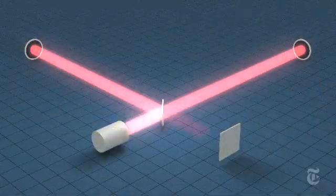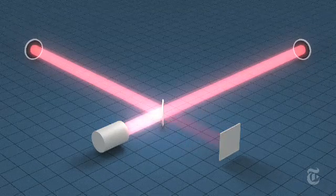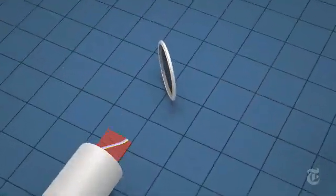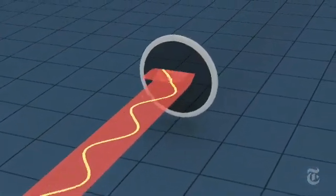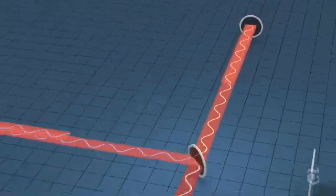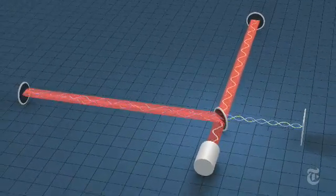A beam of laser light measures the separation of the mirrors. The beam is split and sent toward mirrors at the end of each arm. If the arms are precisely the same length, the returning beams cancel each other out, and LIGO's detector sees no light.